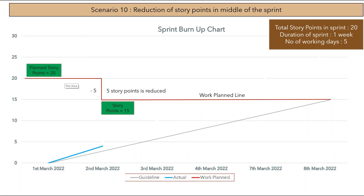In another scenario, the team reduces story points in between the sprint. The planned story points were 20, but after completing one day, the team reduces 5 story points, so the work plan line goes down by 5, making the total 15. The guideline will recalculate and adjust based on the reduction so that both the guideline and the work plan line join together exactly at the end of the sprint. The actual line continues based on team performance.